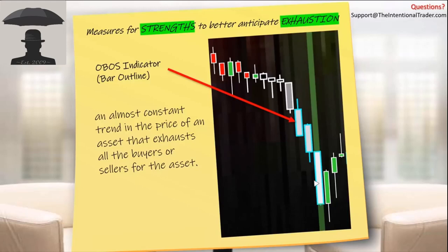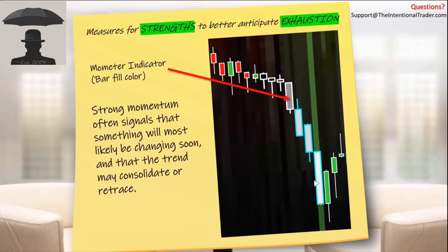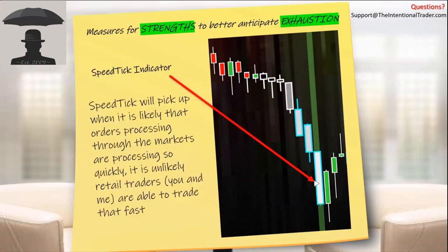With the Armometer indicator, you'll notice that the bar fill colors go from black to a lighter gray to almost white. We're measuring strong momentum — strong momentum often signals that something will most likely be changing soon and that the trend may consolidate, retrace, or pull back.